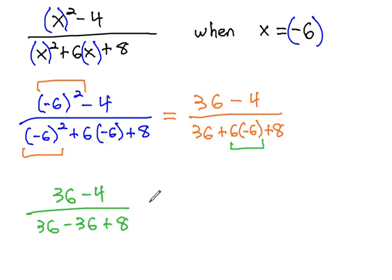And finally, we're allowed to add and subtract. 36 minus 4 is 32 over 36 minus 36 plus 8 is 8.